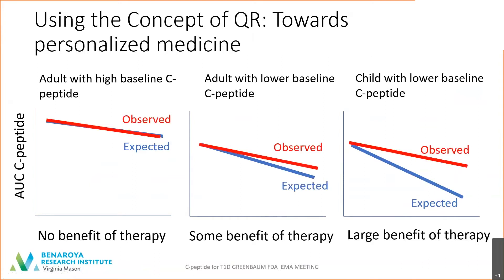This is particularly powerful when thinking about responses to therapy. Here's an example where the observed C-peptide is compared to the expected. This adult, though they ended up at one year with a quite high level of C-peptide, really had no apparent benefit from therapy. In contrast, the adult who started with a lower level of C-peptide and ended up with a lower absolute level did better than expected and therefore had some benefit of therapy. And the child that started at that same level — if their observed level was higher than expected — clearly had a large benefit of therapy, even though their absolute C-peptide level was quite different from the adult who probably had no benefit.